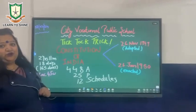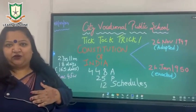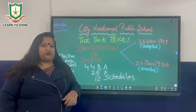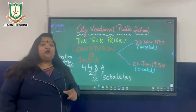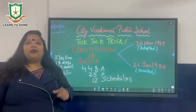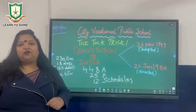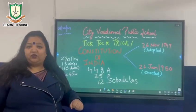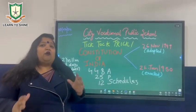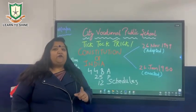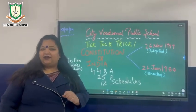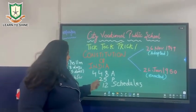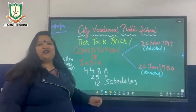This constitution of India is the world's lengthiest constitution. It took 2 years, 11 months and 18 days to make this world's lengthiest constitution. It comprises of 1,45,000 words and it is divided into 448 articles, 25 parts and 12 schedules.